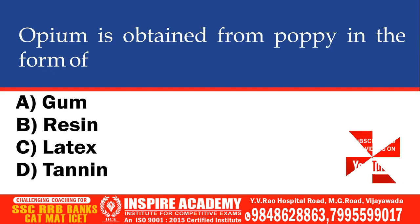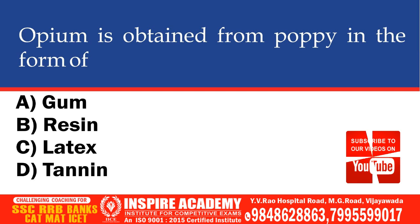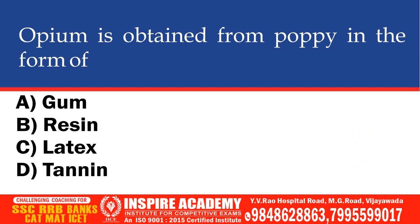Opium is obtained from poppy in the form of which of the following? Options: Gum, Resin, Latex, Tannin. The correct option is Latex.